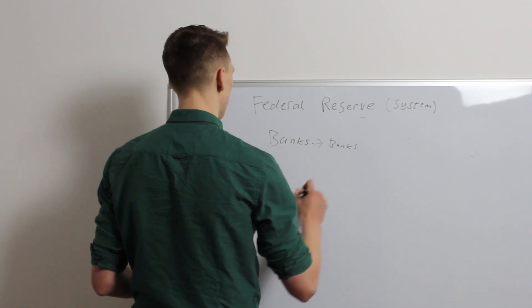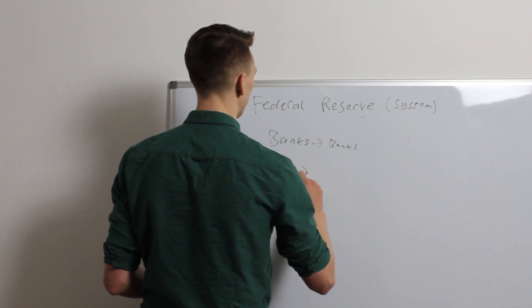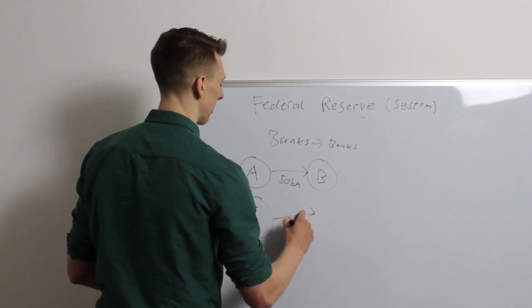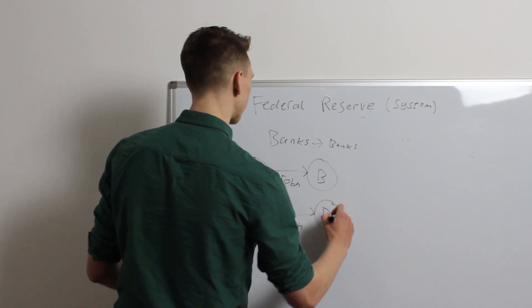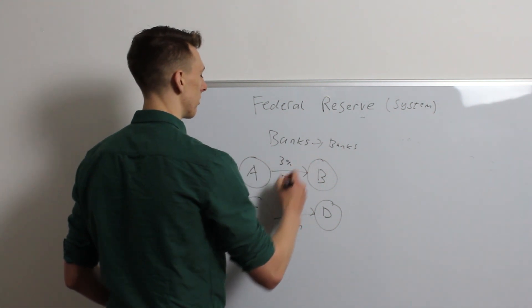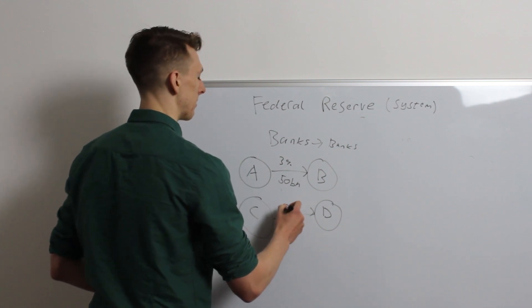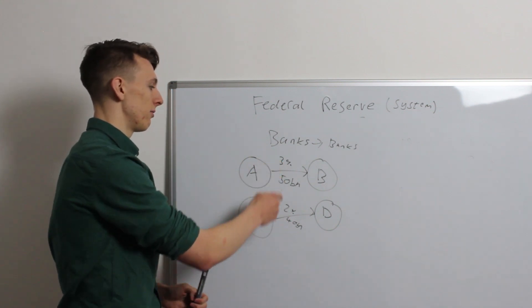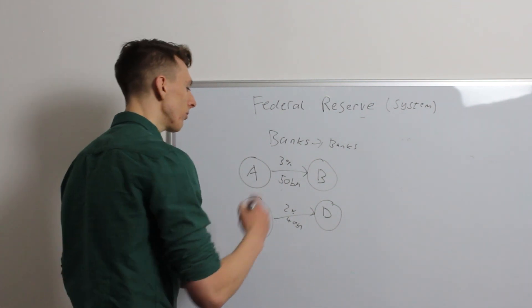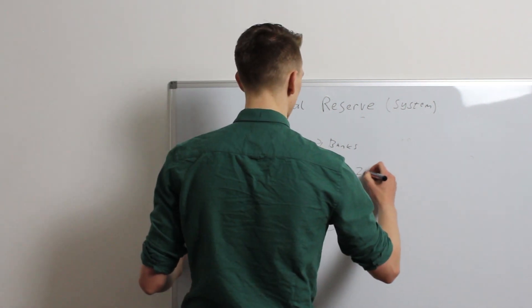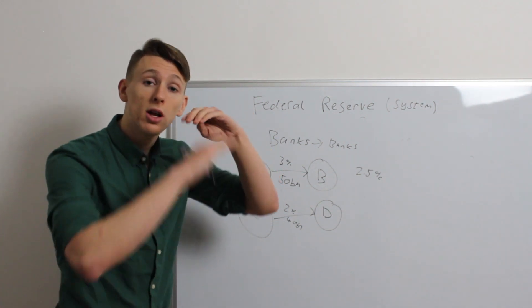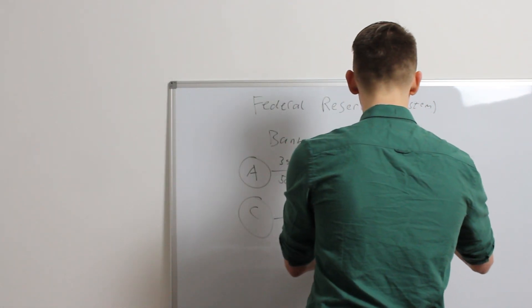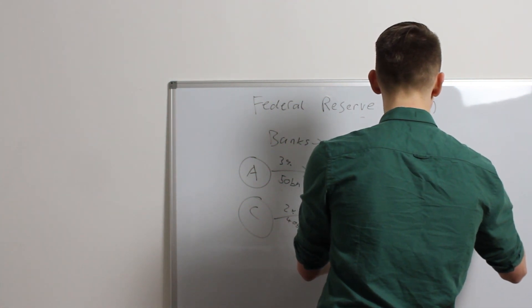So, let's say bank A wants to lend 50 billion to bank B, whilst at the same time, bank C is going to lend 40 billion to bank D. Now, this one's going to be at a 3% interest rate, because maybe bank A doesn't really trust bank B that much, and this one's maybe at 2% because these guys are best friends. What the Federal Reserve looks at, it looks at these rates, and it calculates what the average is. The average of this one's going to be 2.5%. So, they look at the average of all the loans between all the different banks for a given period.